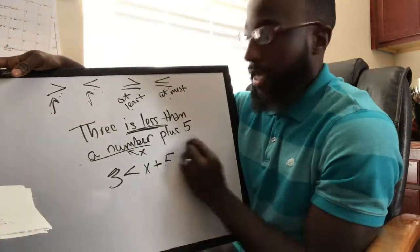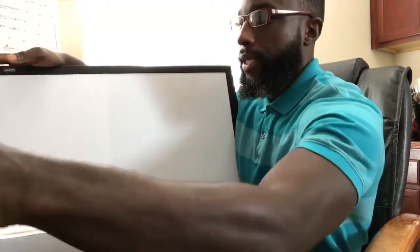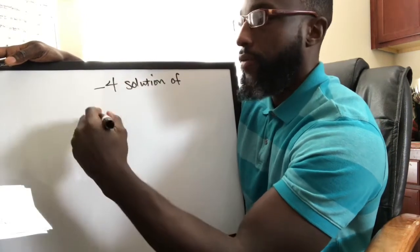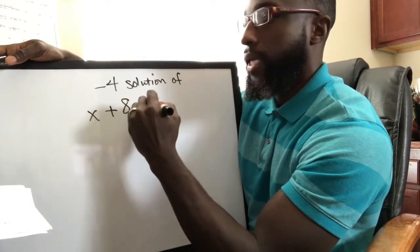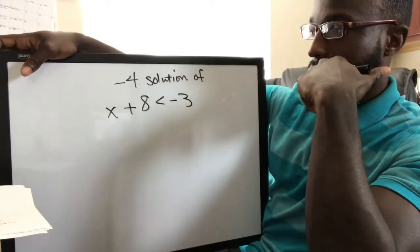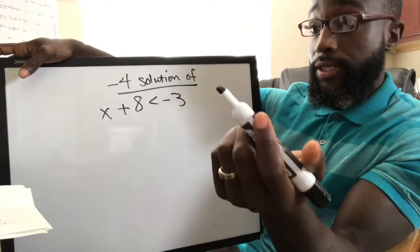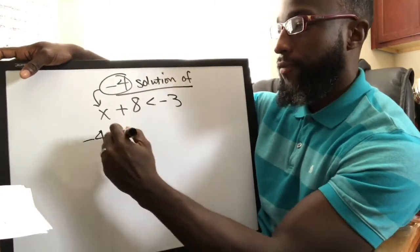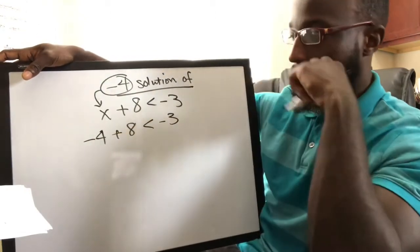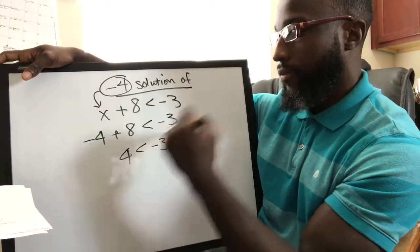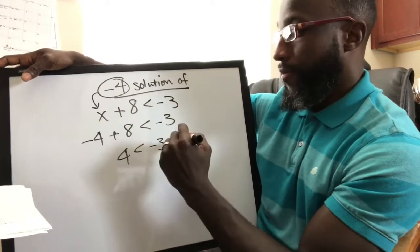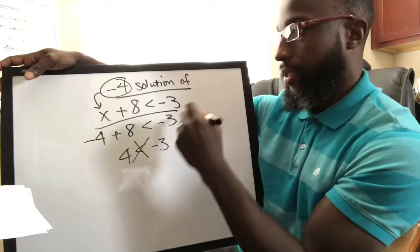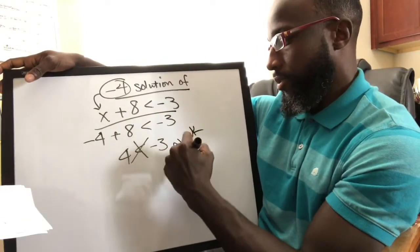Let's talk about checking solutions. They want to know if negative 4 is a solution of x + 8 < −3. When checking a solution, you substitute. So we get: −4 + 8 = 4. Is 4 less than negative 3? No — 4 is greater than negative 3. Therefore, negative 4 is not a solution of this inequality.